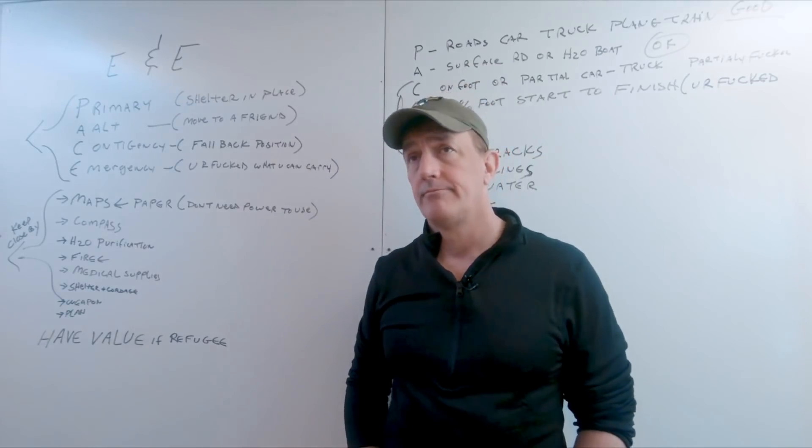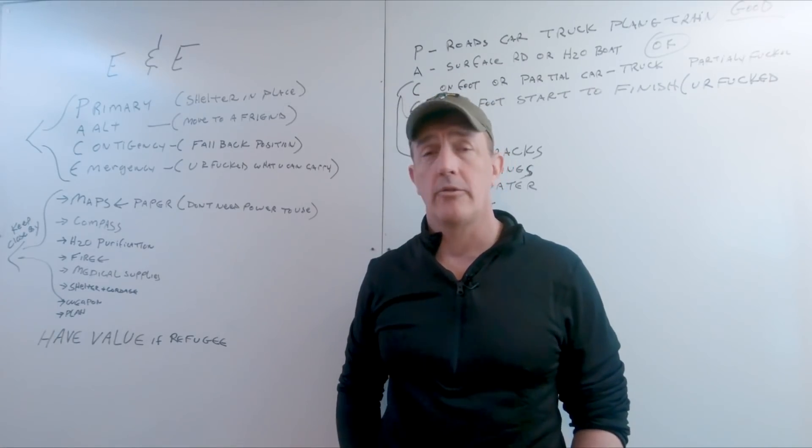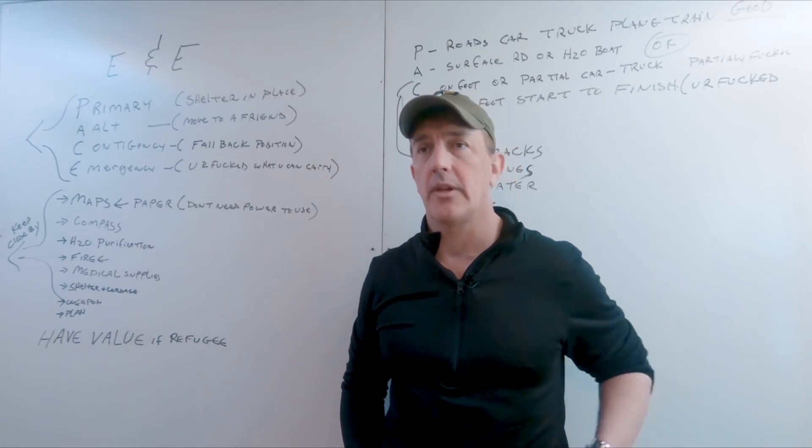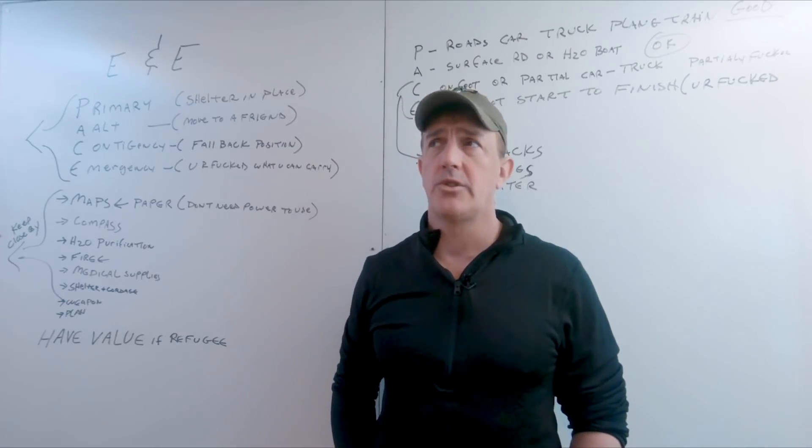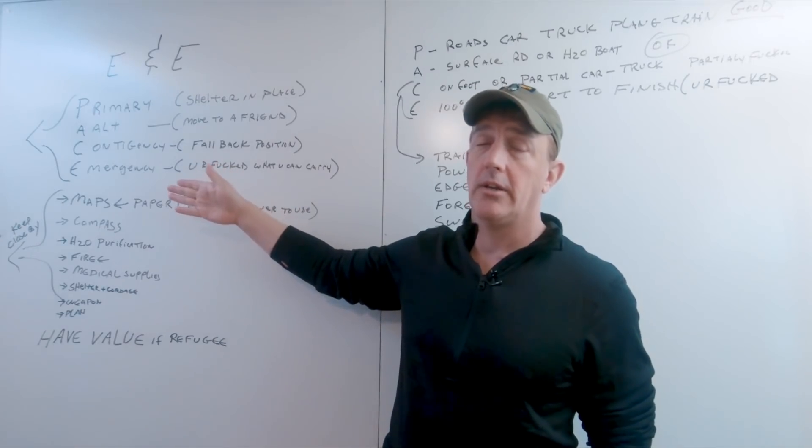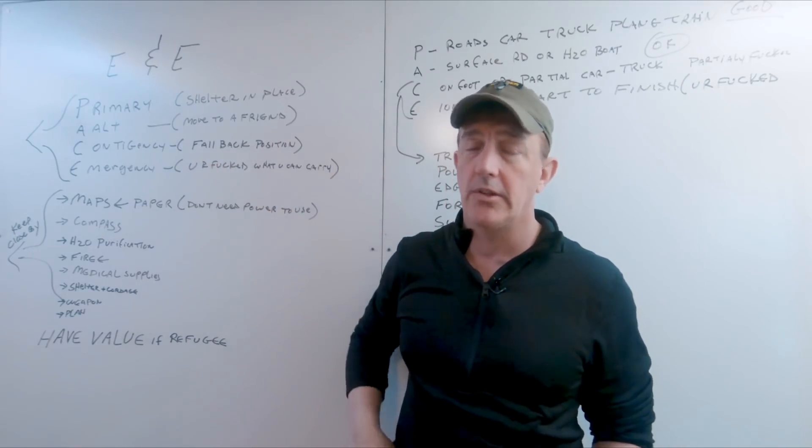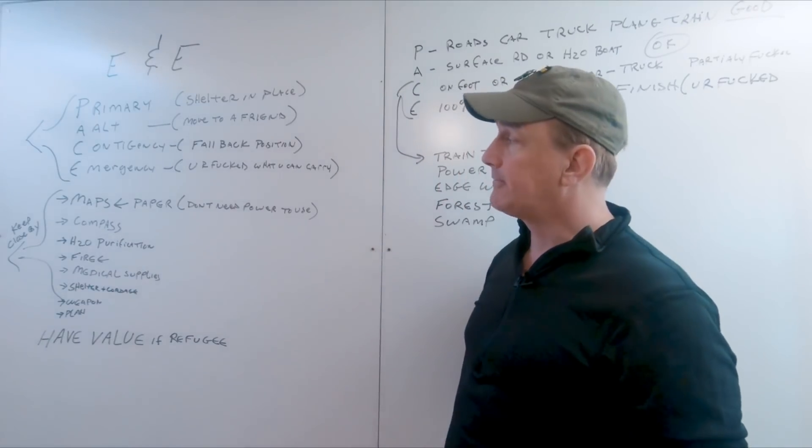Now, people are like, what's a fallback position? Well, a cabin, friend's house where you have supplies and you have agreements with him that it's cool if you go there. Because if you just run out of the area, you're a refugee. And historically, refugees are not treated well or looked upon favorably. Just saying.